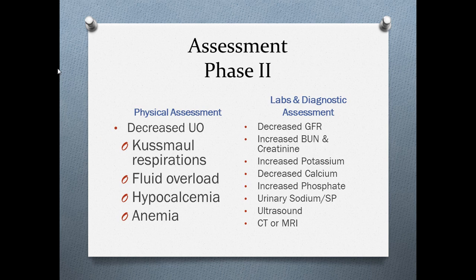In phase two, physical assessment will show decreased urinary output and Kussmaul respirations. The reason patients have Kussmaul breathing is that the kidneys are not making bicarbonate — kidneys are responsible for base production — so the lungs must compensate. You'll also see signs and symptoms of fluid volume overload. Hypocalcemia will cause changes in mobility, potential changes in gait, and potential changes in reflexes.